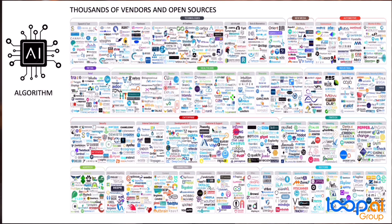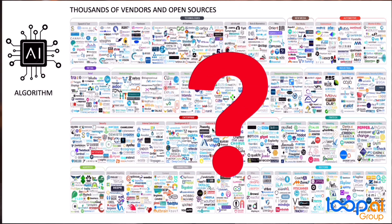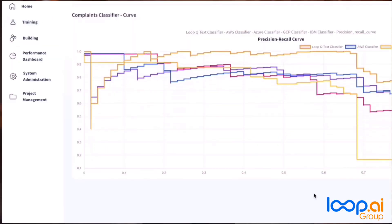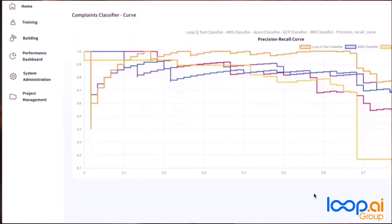In a rapidly evolving market with thousands of paid and open-source algorithm providers, Loop Agent Orchestra empowers organizations to tackle the complex challenge of identifying, benchmarking, and selecting the most efficient algorithms — not just at the outset, but throughout the entire lifecycle of your AI agents.